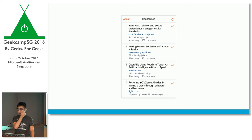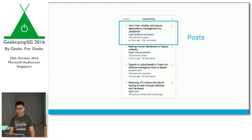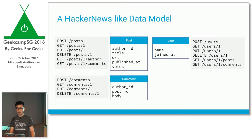For the rest of this talk, let's imagine we're building a Hacker News or Reddit clone. We have a list of posts and links, which are essentially links to interesting stuff. The resources we need would be posts, users, and comments. This could be a possible data model for such an app — three tables with some fields — and we expose some endpoints to allow our API consumers to interact with our underlying data model.